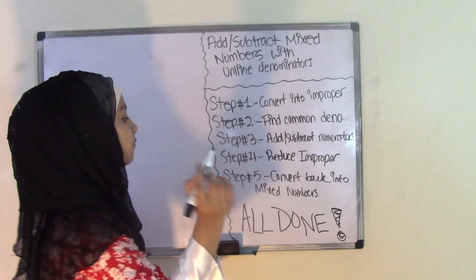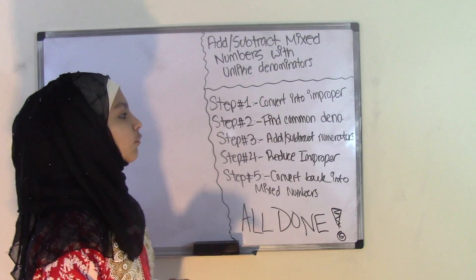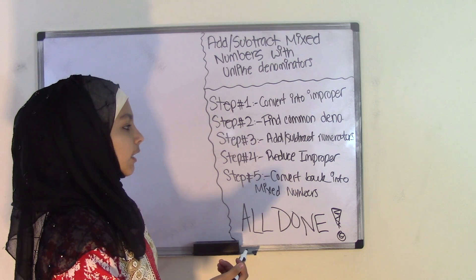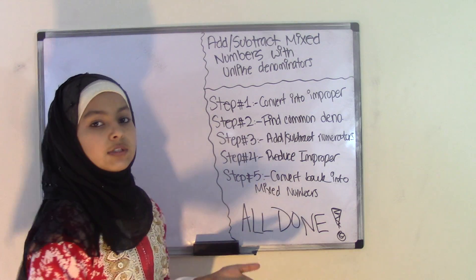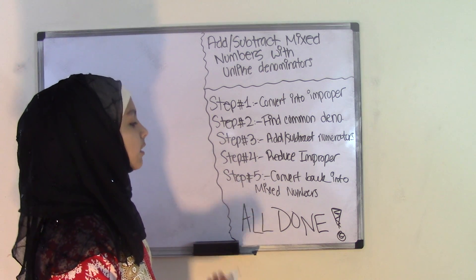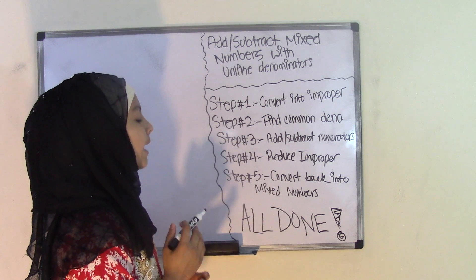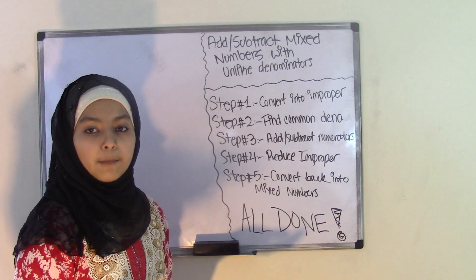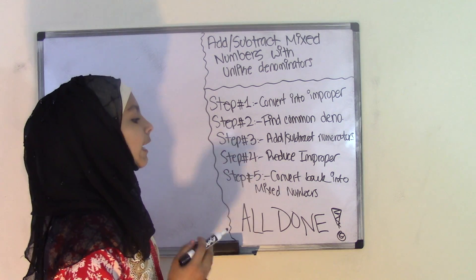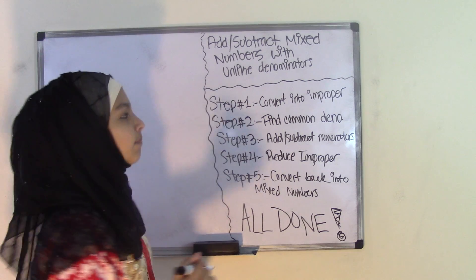Today we'll be using these five simple steps. Step one is convert into an improper fraction. Step two is find common denominator by using the LCM method. Step three is add or subtract the numerators — only the numerators, the denominator stays the same. Step four is reduce your improper fraction. And step five is convert back into a mixed number. So these are the five steps that we'll be using today.